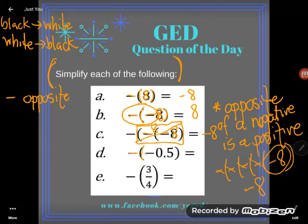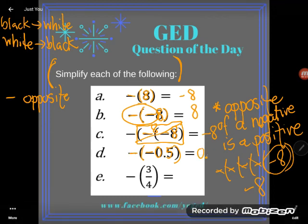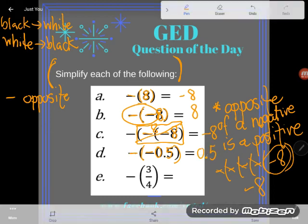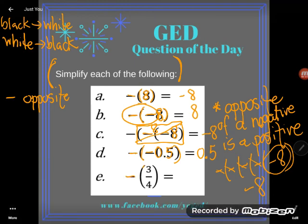I want the opposite of negative 0.5. Now don't be panicked just because it's a decimal - we're going to see the exact same principle. The opposite of a negative is going to be a positive, and so I get positive 0.5. And again don't get panicked by a fraction either. What is the opposite of 3/4? Well it's just negative 3/4.